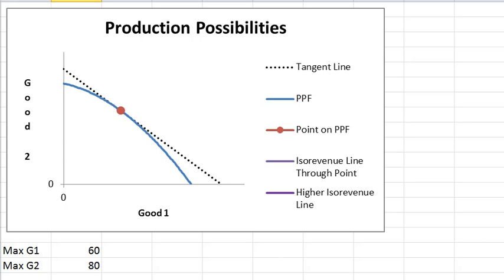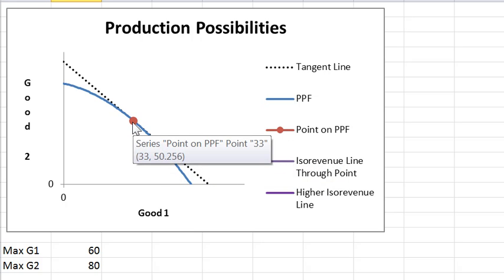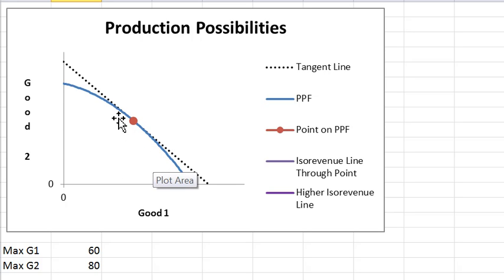You also get to select the point on the curve, and the dashed line is the tangency point. The slope of this dashed line in absolute value gives what is called the rate of product transformation, or if you will, the opportunity cost of good one. It measures how much good two you have to give up to get an additional unit of good one. That's an opportunity cost idea.